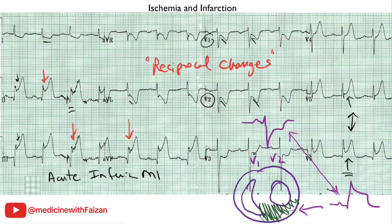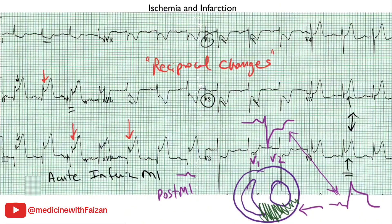This is a very important point because in a true posterior myocardial infarction, the posterior wall of the left ventricle really doesn't have any ECG leads over it. Sometimes in posterior wall MI, all you will see are these reciprocal changes that occur in V1 and V2. A posterior wall MI is usually diagnosed with a tall R wave and an ST segment depression in V1 and V2.